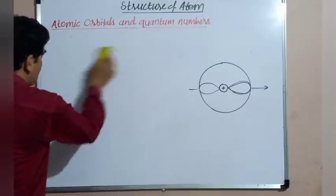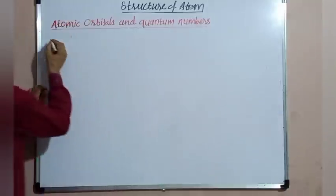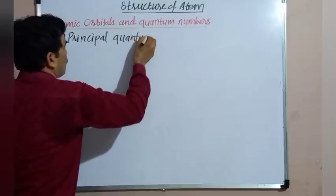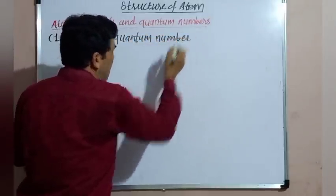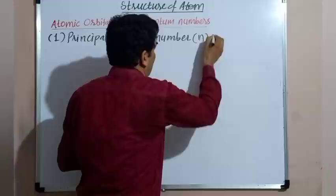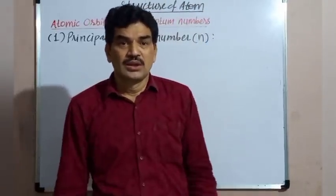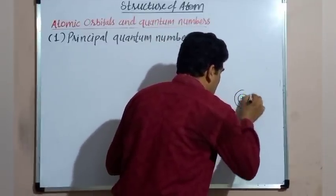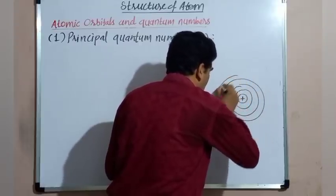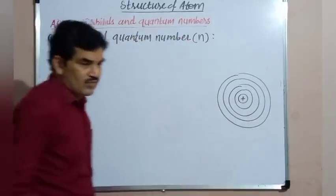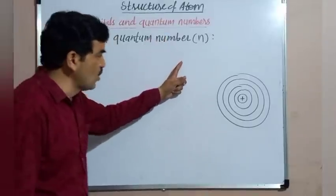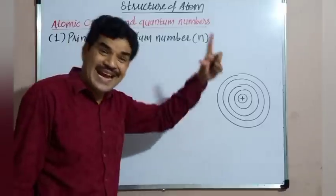Let us discuss these quantum numbers one by one. First is the principal quantum number. The principal quantum number describes or denotes the shell or the orbit to which the electron belongs. The principal quantum number gives the orbit number or the shell number to which the electron belongs.